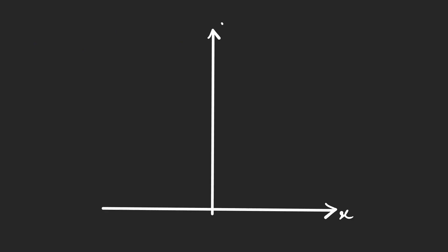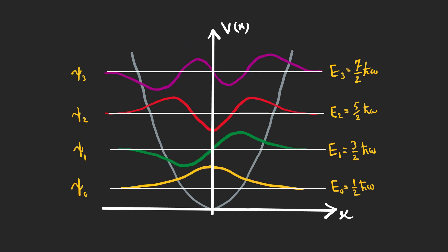Finally, let's graph the first few stationary states. As you can see, they are alternately even and odd, and each graph has n nodes.